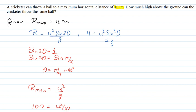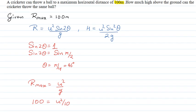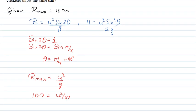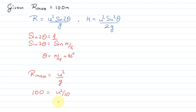So after this, we will find the value of u squared, and u squared will be 100 into 10, that means 1000. We will find the value of u squared directly, and the value of theta is 45 degrees.